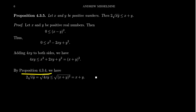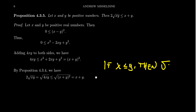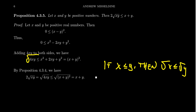By the previously proven Proposition 4.3.4 — which states that for positive real numbers, if x ≤ y then √x ≤ √y — with 4xy in place of x and (x+y)² in place of y, we get that the square root of 4xy, which equals 2 times the square root of xy, is less than or equal to the square root of (x+y)², which simplifies to x plus y. This gives us the inequality we were looking for, completing the proof.